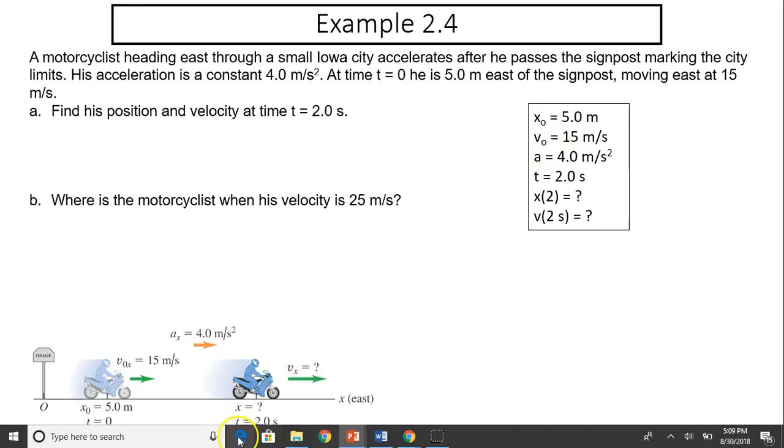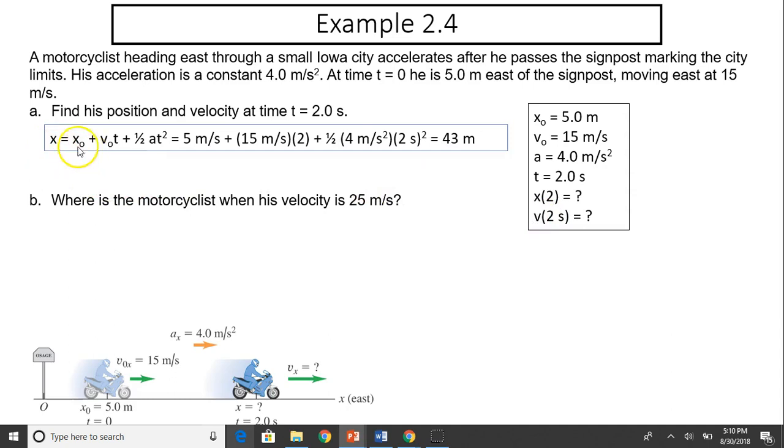So what is his position and velocity? Given: Initial position is 5 meters, initial velocity 50 meters per second, acceleration 4 meters per second squared. At time t equals 2 seconds, what is his position and velocity? Take a look at the equation for position. We have x0 plus v0t plus 1/2 at squared. We choose that equation because of what's given. Plug everything in, and you should have 43 meters.